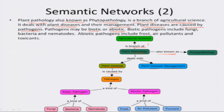Biotic pathogens include fungi, bacteria, and nematodes. These are plotted as concepts in the concept map and linked to biotic pathogen by means of a 'kind of' relationship. Abiotic pathogens include frost, air pollutants, and toxicants, which are similarly represented as concepts in the map.